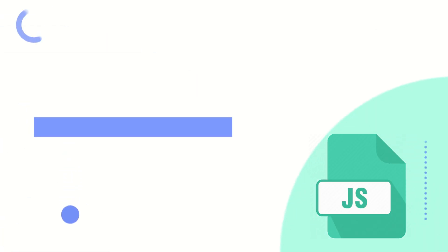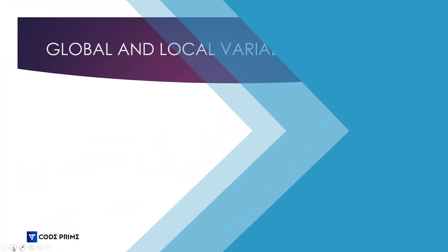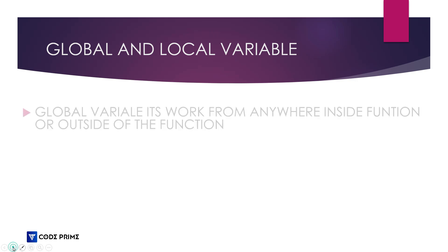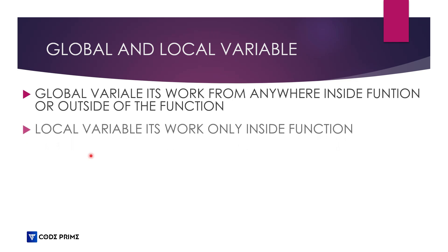Hello everyone, welcome back to Code Prime. In this JavaScript tutorial series number 20, we are going to learn about JavaScript global and local variables — how they are used and how they work. Global variable works from anywhere outside of a function, wherever you write it outside the function it will work from anywhere.